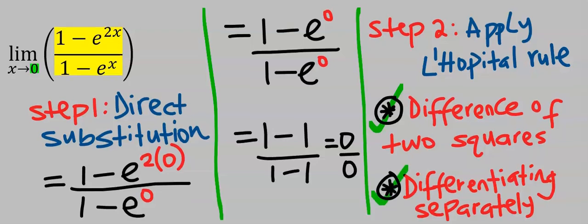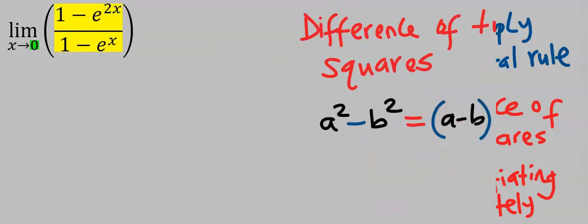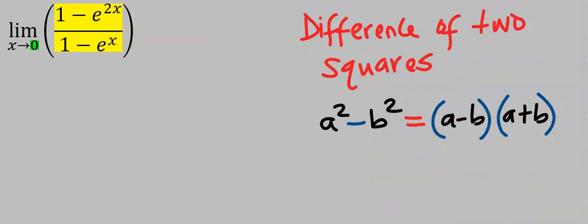Let's start with difference of two squares. Later we are going to use differentiation as an alternative method. The law governing difference of two squares is: a squared minus (it must be a minus) b squared...